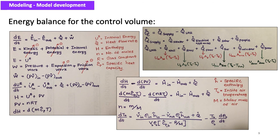The symbols used in the energy balance equation are: U_E is the internal energy; Q_dot is the heat flow rate; H is the enthalpy; N is the number of moles of air; R is the gas constant; Ĉ_P is the specific heat capacity; Ĥ is the specific enthalpy; θ_B is the inside air temperature; and M is the molar mass of air.